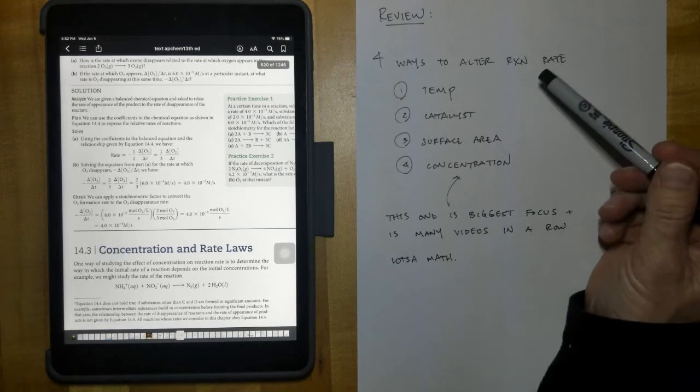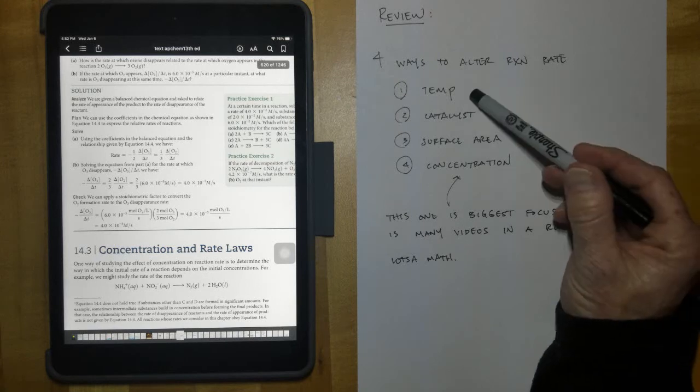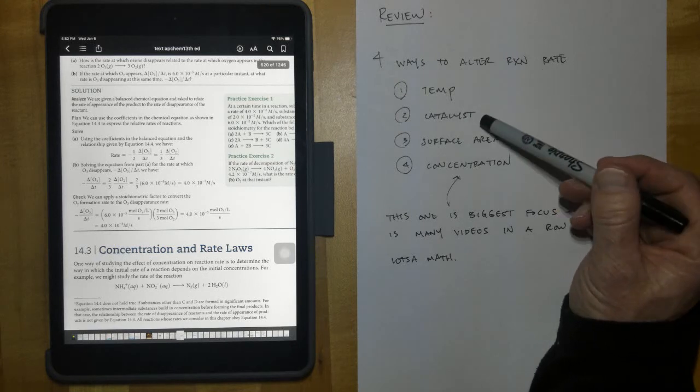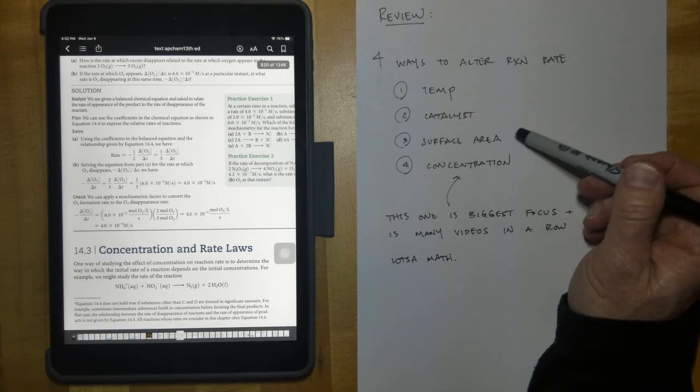All right, let's do a quick review. There are four ways to alter the rate of a reaction. First of all, temperature, which we watched at least one video about. A catalyst, we had a number of examples. Surface area or the nature of the reactant, and now concentration.